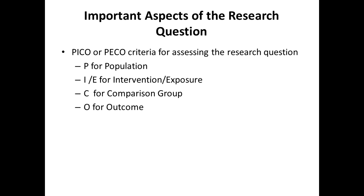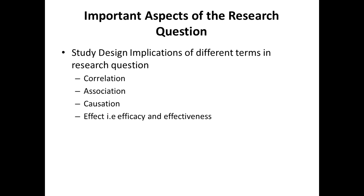PICO is a very important objective criteria to understand and assess the contents of the stem of the research question. There are two types: PICO and PECO. P stands for Population, I or E stands for Intervention or Exposure, C stands for Comparison group, and O stands for Outcome. We will spend a considerable amount of time explaining this criteria with specific examples.